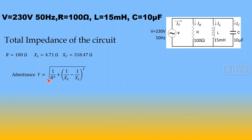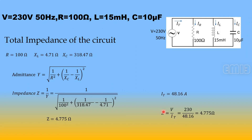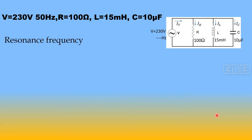Total impedance: Y = √((1/R)² + (1/XC − 1/XL)²), then Z = 1/Y = 1/√((1/100)² + (1/318.47 − 1/4.71)²) = 4.775 Ω. This is verified by Z = V/IT = 230/48.17 = 4.775 Ω.